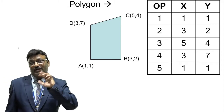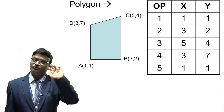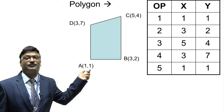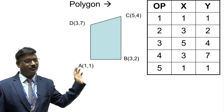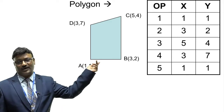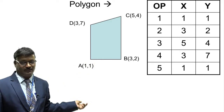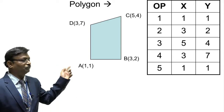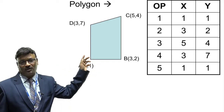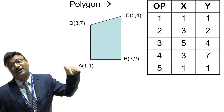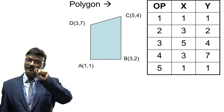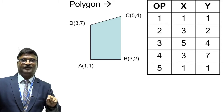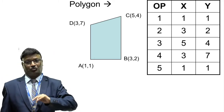What coordinates do you have to read and store? I have shown this as OP and XY — that is the output point, and XY are the coordinates. For this polygon, suppose I start with vertex A at (1,1), then B at (3,2), C at (5,4), D at (3, ...) and so on. I again put (1,1) at the end. So this closed figure goes A, B, C, D and back to A — this is the way you read coordinates one by one and store them.